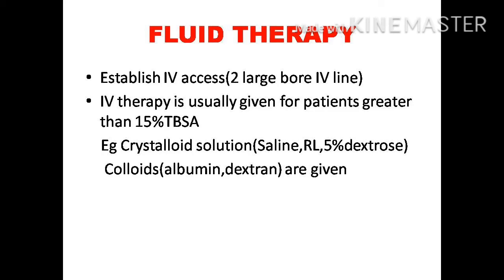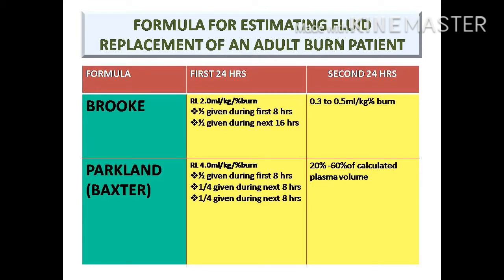Two formulas estimate fluid replacement for adult burn patients. The Brooke formula: Ringer's lactate 2 ml per kg body weight per percentage of area affected in the first 24 hours — half given in the first 8 hours, the remaining half in the next 16 hours. The second day: 0.3 to 0.5 ml per kg per total body surface area. The Parkland formula: Ringer's lactate 4 ml per kg body weight per total body surface area — half given in the first 8 hours, one-quarter in the next 8 hours, and one-quarter in the final 8 hours. On the second day, 20 to 60% of calculated plasma volume is given.